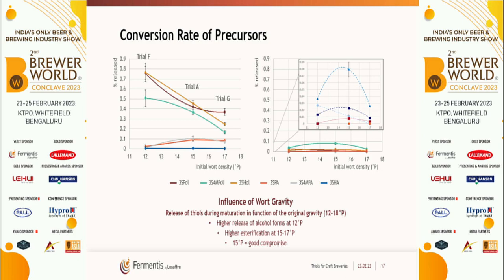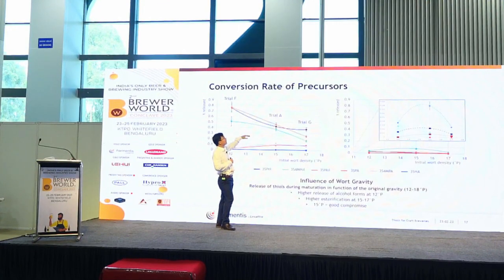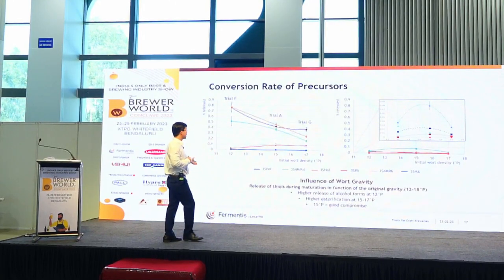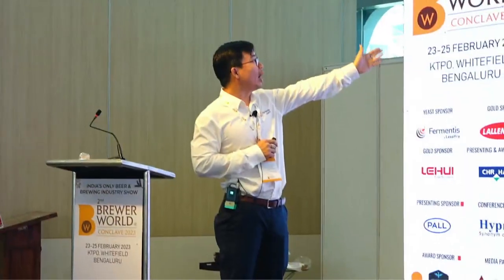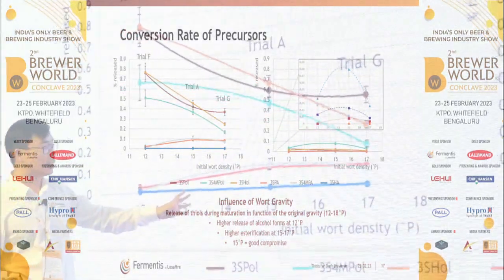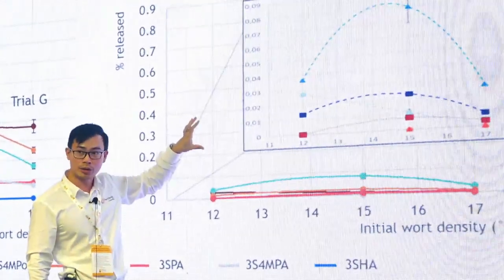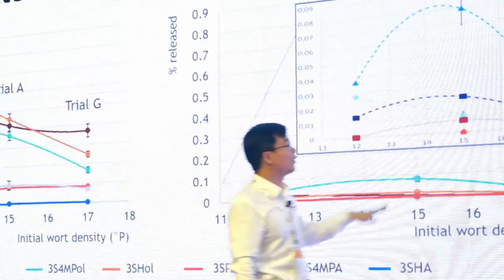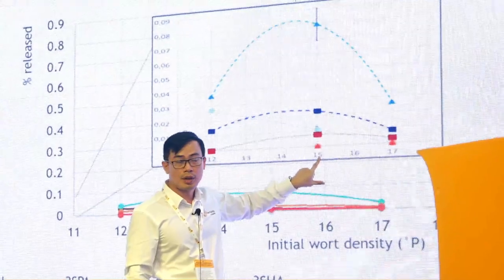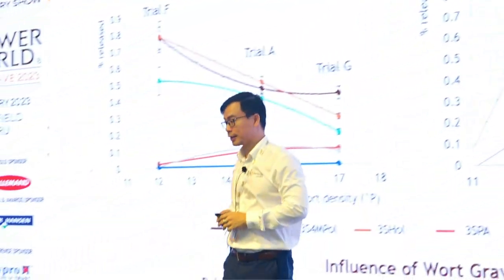Now examining different wort gravities — 11, 12, 13, 14, up to 17 Plato — to understand the effect of sugar concentration on thiol release. The data shows 12 Plato gives quite a high amount of thiols. Very high gravity can reduce thiol release somewhat. For the second precursor — the glutathione-bound one — 15 Plato shows the best result. So you may want to target 15 Plato to achieve the highest thiol release and S-acetylation.